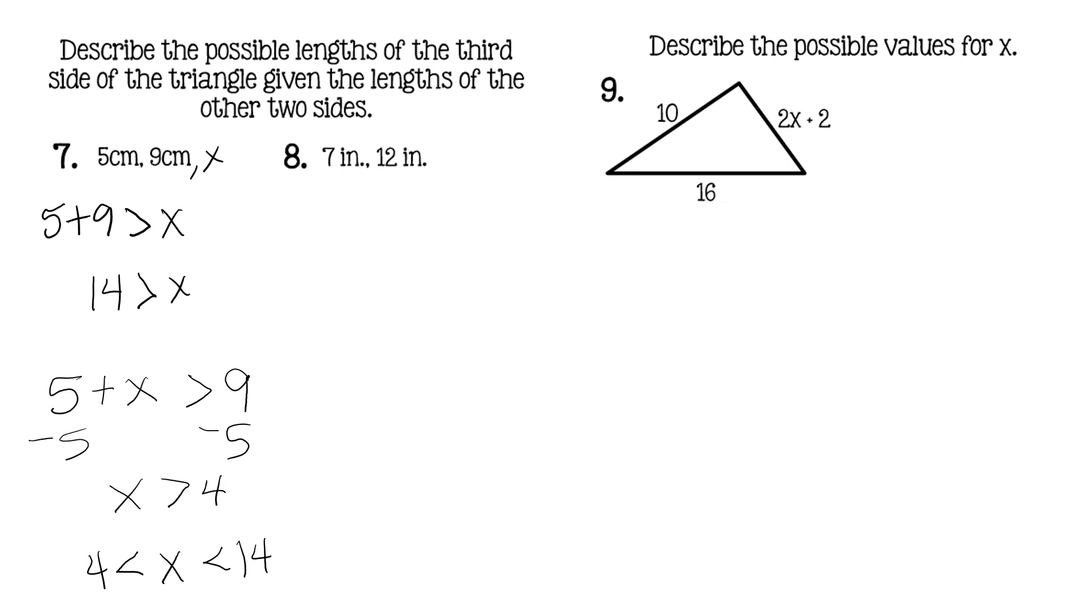So our two possibilities is X has to be somewhere between 4 and 14 to satisfy both conditions. Look at number 8, so if we have 7 inches, 12 inches, and X inches. Well, if 12 is the largest side, so that would be 7 plus X has to be greater than 12. So subtract our 7 from both sides, so X has to be greater than 5.